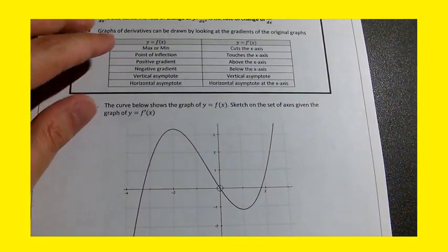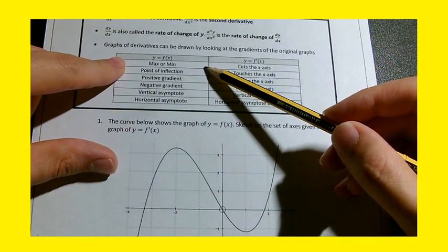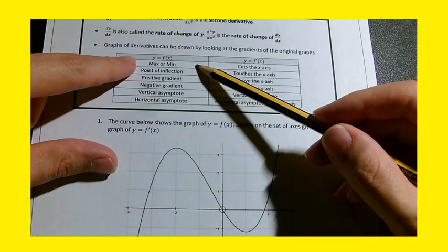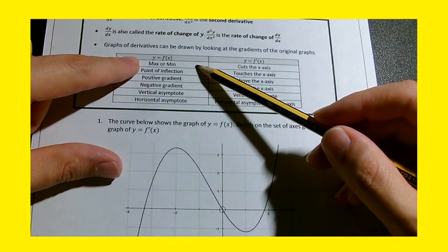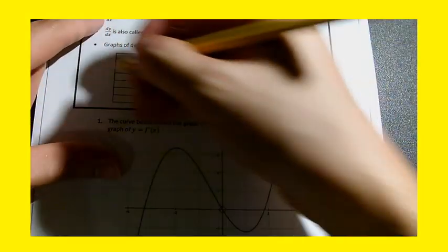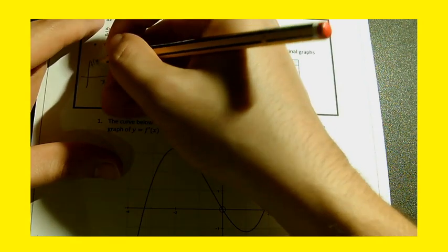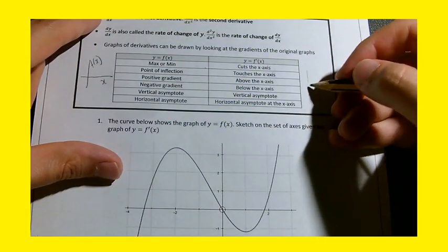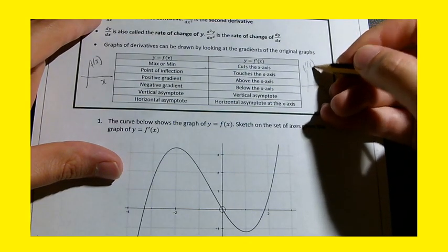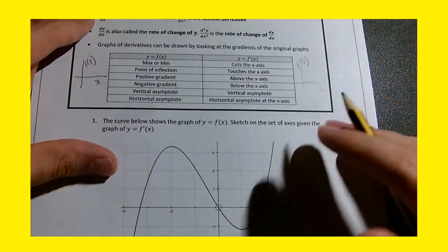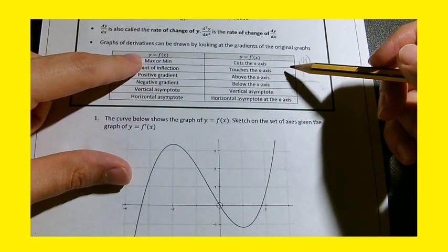Let's look at this table here. If we have a maximum minimum, then that would suggest that the gradient is equal to zero at those points. We have a graph of x against f of x, and what we've got here is x against f dash of x, the derivative. If we've got a maximum minimum, then the gradient is equal to zero for that x value.